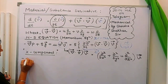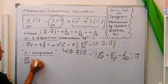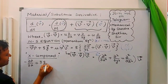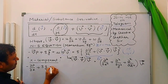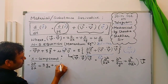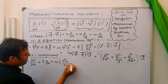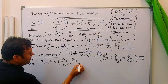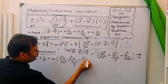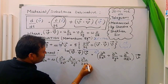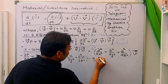We can write it as: minus del-p by del-x — that is the x-component of pressure force — plus rho into g-x — the acceleration component in the x direction — plus mu into del-squared u by del-x-squared plus del-squared u by del-y-squared plus del-squared u by del-z-squared, equals density into acceleration in the x direction, a-x.